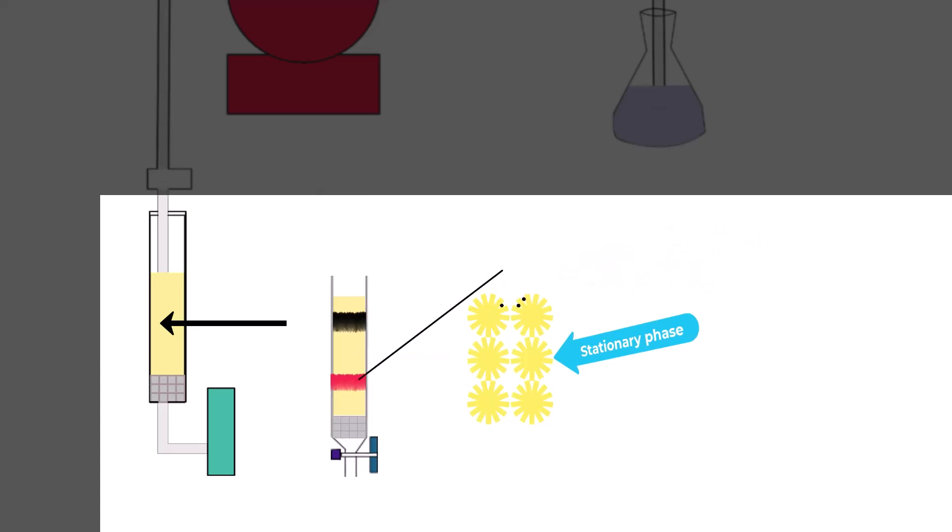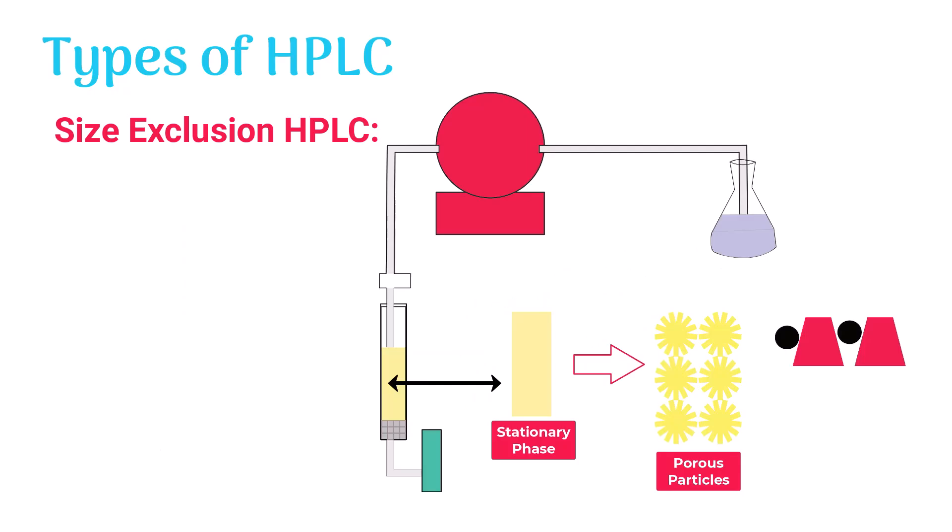While the larger sample molecules are not arrested and move faster down the column. This way, the sample molecules get separated based on their size.